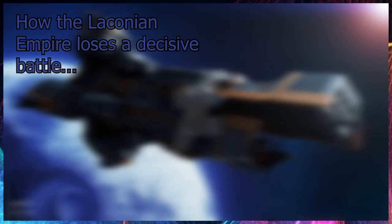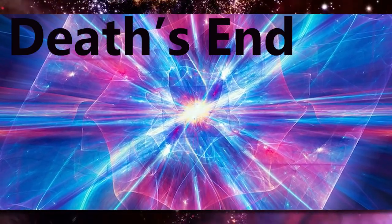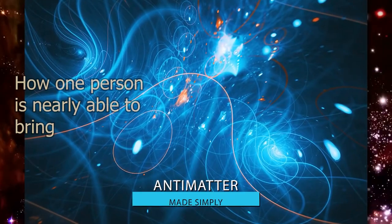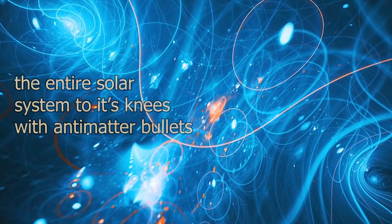In the Expanse, we'll see how the Laconian Empire loses a decisive battle to a few grams of anti-matter. In the Three-Body Problem's third book, Death's End, we'll go over how one person is able to nearly bring the entire solar system to its knees using anti-matter bullets.